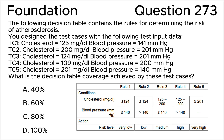Test case 3 — cholesterol equals 100 to 124 milligrams per deciliter, blood pressure equals 201 mmHg. Test case 4 — cholesterol equals 109 milligrams per deciliter, blood pressure equals 200 mmHg. Test case 5 — cholesterol equals 201 milligrams per deciliter, blood pressure equals 140 mmHg. What is the decision table coverage achieved by these test cases? A) 40%, B) 60%, C) 80%, D) 100%.